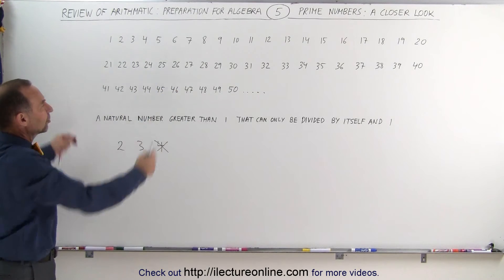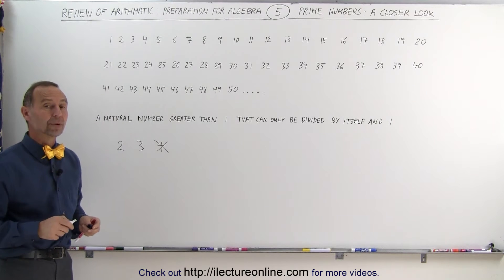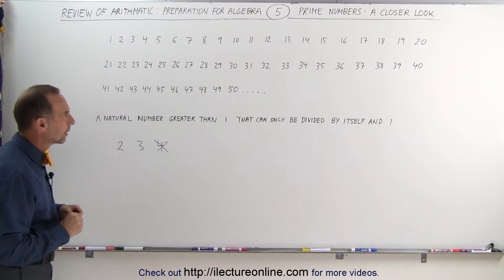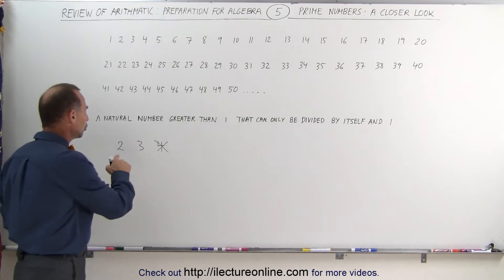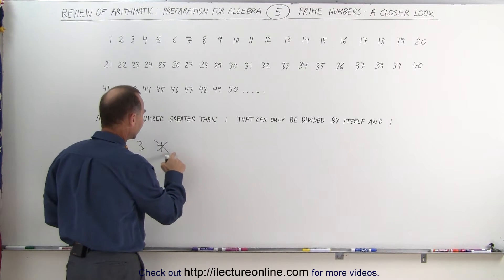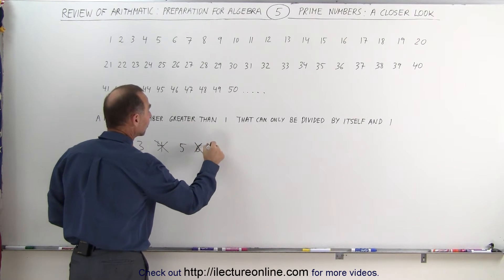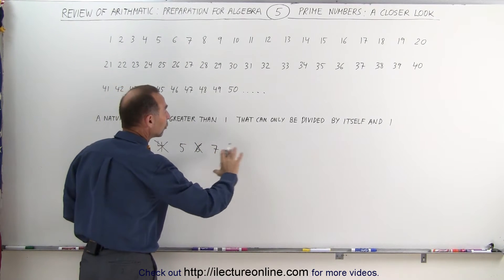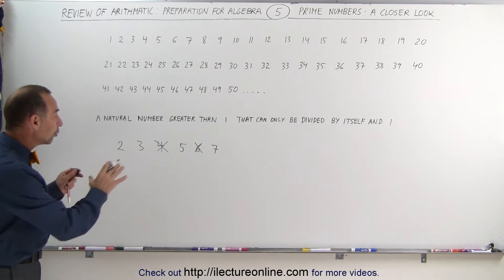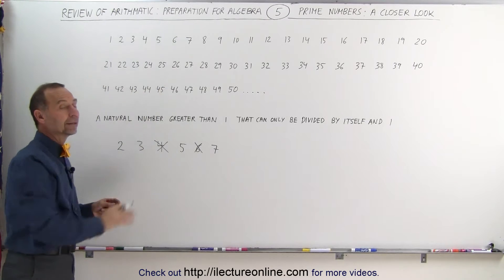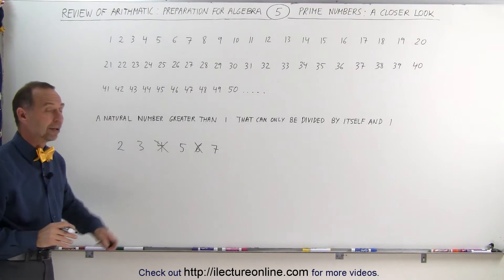Now if we see a bunch of numbers like this, how do we figure out which is a prime number and which is not? Well, the smaller prime numbers are 2, 3 — 4 is not — 5 is a prime number, 6 is not, 7 is a prime number, and those are the only prime numbers smaller than 10. Those will help us figure out the others, especially the numbers 2, 3, and 5.